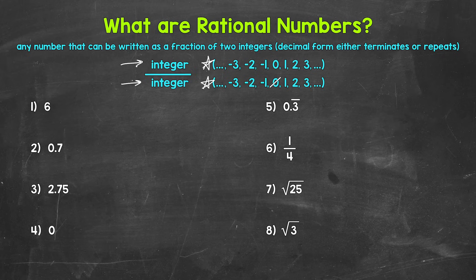Decimals and fractions are not included in integers. One thing to mention: the denominator cannot be zero, because that will give us a value that is undefined. That's why zero is crossed off for the denominator — something to keep in mind.